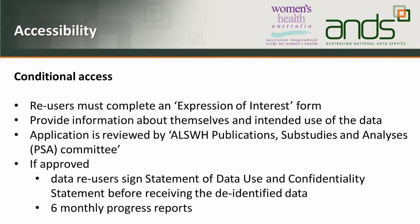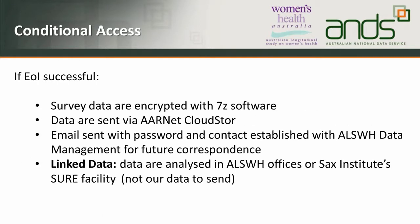An investigator or re-user who wants access to our survey data must first complete an Expression of Interest form, stating who they are, why they are a serious researcher, and what they want to find out from the data. That is reviewed by our publication sub-studies BSA committee. If their Expression of Interest is approved, they will sign confidentiality and data use statements before receiving the de-identified data, and they must also report back to us about their progress.